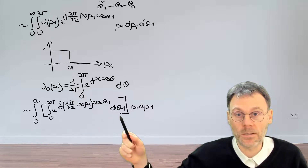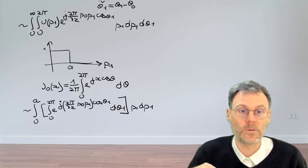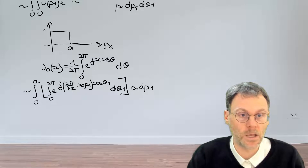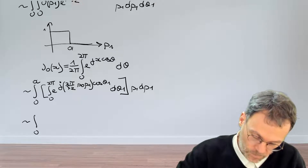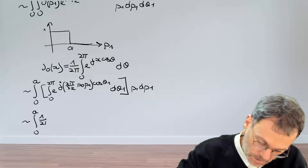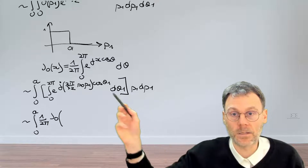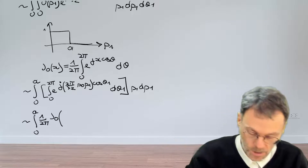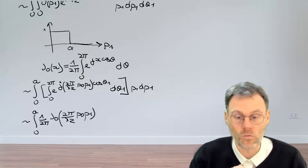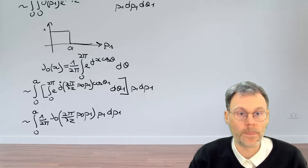The angular integral in square brackets can be simplified using the J₀ formula. Writing this as an integral from 0 to a, the angular part gives (1/2π) times a Bessel function of order 0 with argument 2π/(λz) · ρ₀ρ₁, which is the coefficient in front of the cosine. We still have ρ₁ dρ₁ remaining.